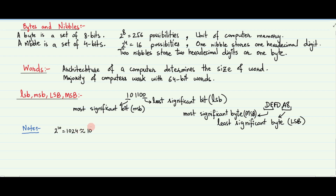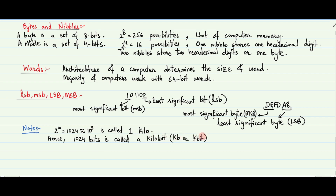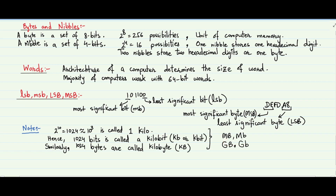Note that 2 raised to power 10 is equal to 1024, which is nearly equal to 1000. Hence, the term kilo indicates 2 raised to power 10. For example, 1024 bits is called a kilobit, denoted by kb or kbit, and 1024 bytes is called a kilobyte, denoted by capital KB. Similarly, capital MB, capital Mb, capital GB, and capital Gb are used for millions and billions of bytes and bits respectively. Memory capacity is usually measured in bytes, and communication speed is usually measured in bits per second.